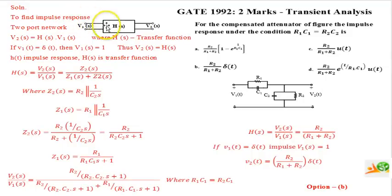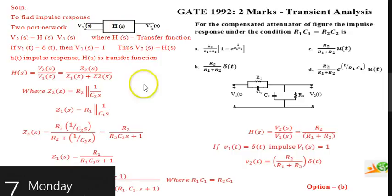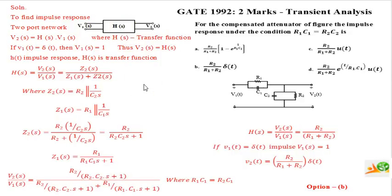We will see here, it is a network where H(s) is the transfer function, V1(s) is the input and V2(s) is the output for this network. For this two-port network, V2(s) is given by H(s) times V1(s).